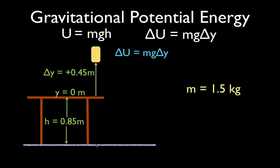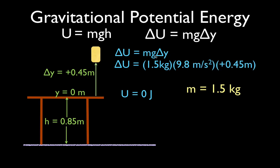We could have said the reference point is down here at the floor, or right here, or anywhere really. But what we're going to say is that where it starts is usually the easiest thing to do — that's going to be our 0 Y coordinate. Therefore, we can say it has no potential energy relative to this point. So we calculate the change in potential energy: the mass is 1.5 kilograms, acceleration due to gravity is a constant, and we change the object's position on the Y axis by plus 0.45 meters. Therefore, we increase the object's potential energy by 6.6 joules — the change in potential energy from this point to this point is plus 6.6 joules.